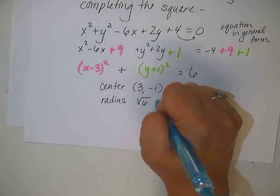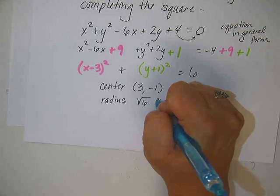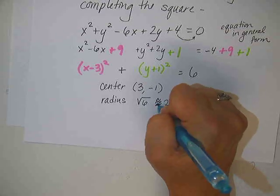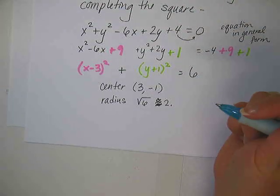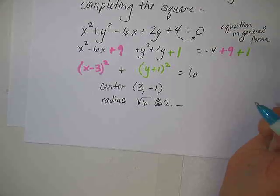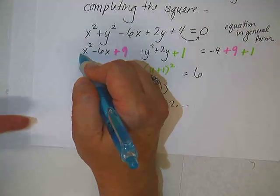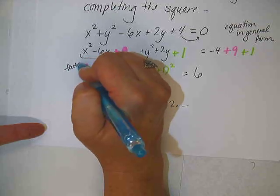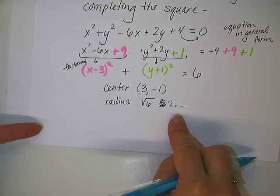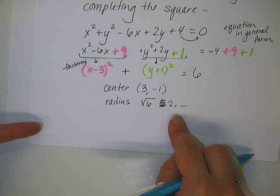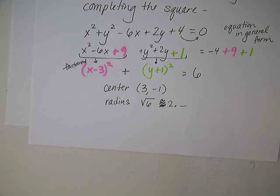Okay. So that gives us negative 4 plus 9 is 5 plus 1 is 6. So that's a weird answer at the end, but that's okay. Where's the center? Positive 3, negative 1. And what's the radius? The square root of 6, which is approximately 2 point something. Because it's bigger than 4 and smaller than 9. Right? So the answer is between 2 and 3. Do you see what I did in this step where I took this thing and I factored it as I was going? So that's factored, and this is this part factored, and that is what allows us to find the center and the radius. Okay?